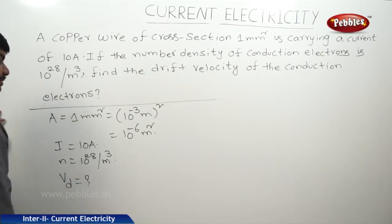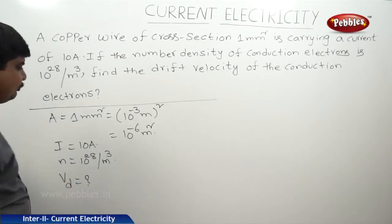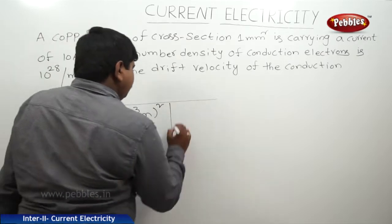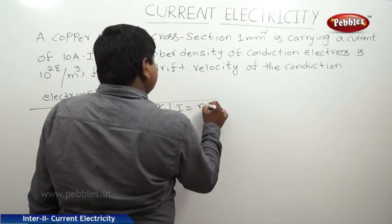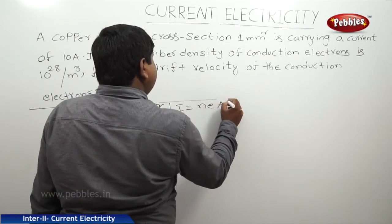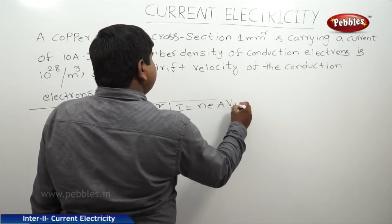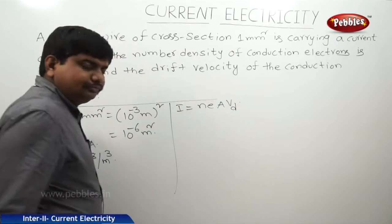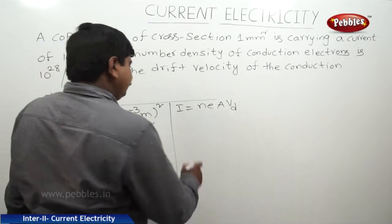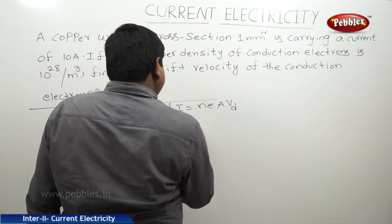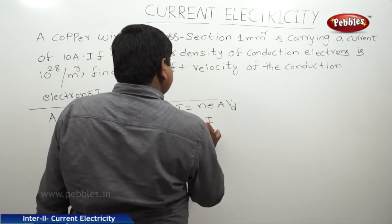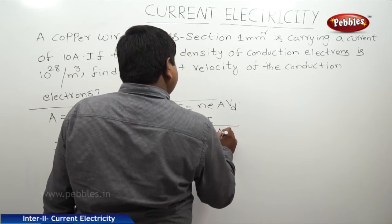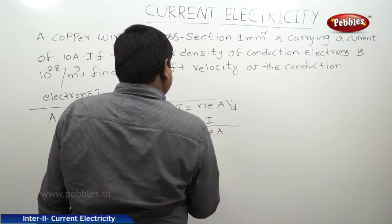We need to find Vd. We know that I is equal to n·e·Vd. Therefore, Vd is equal to I divided by n·e·A.